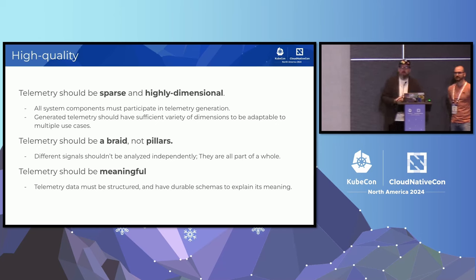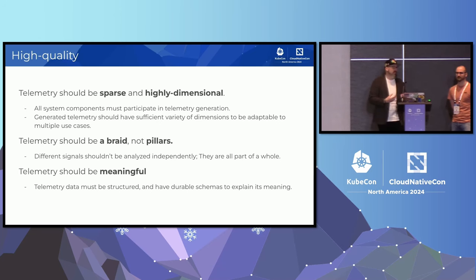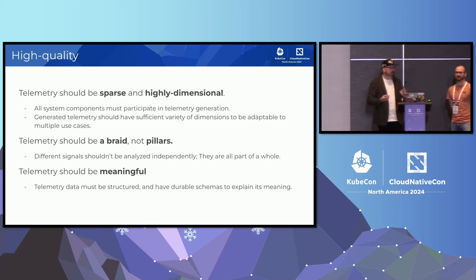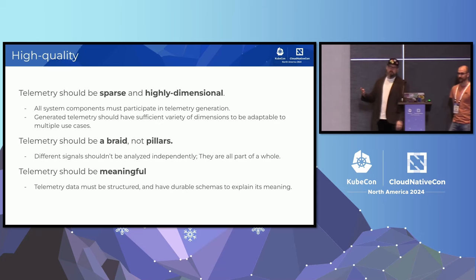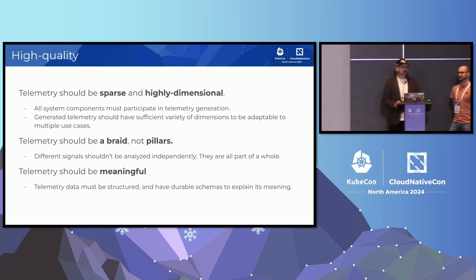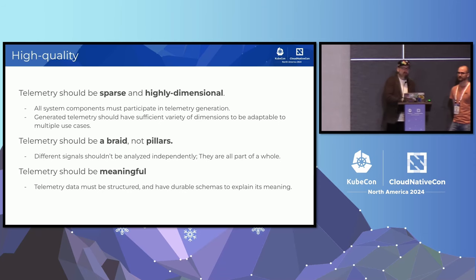What is our goal as a project? We have a vision, and that vision says that telemetry, to be effective for observability, needs to be sparse and highly dimensional. Everything in the system needs to participate in telemetry generation, and that generated telemetry needs to have a sufficient variety of dimensions that can be adaptable to different use cases. Telemetry is not three pillars or four pillars or five pillars — telemetry is one single interrelated braid of data that is self-referential. That means the analysis of that data cannot be isolated either. It has to be meaningful data with structure and a schema that can help you interpret and understand the meaning of the telemetry.